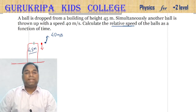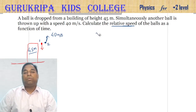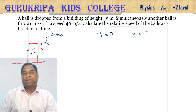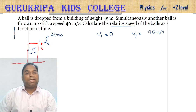If we call the red ball 'ball 1' and the green ball 'ball 2', the velocity of ball 1 is 0 and the velocity of ball 2 is 40 meters per second. We define upward direction as positive and downward direction as negative.